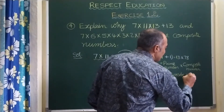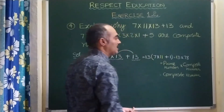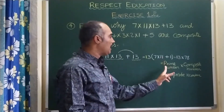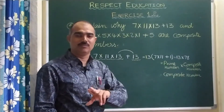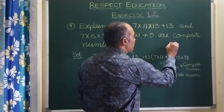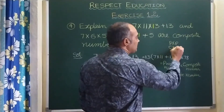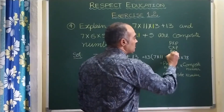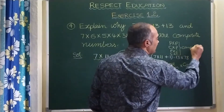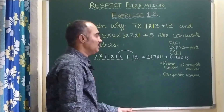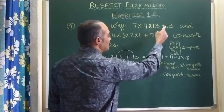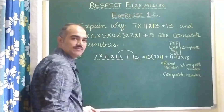Remember children: not only prime into composite gives composite. Prime into prime is also composite only — for example, 2 into 3 is 6, and 6 is a composite number. So remember: prime into prime, composite into prime, prime into composite, composite into composite — whatever the case, the answer is always a composite number. Therefore, 7 into 11 into 13 plus 13 has become a composite number.